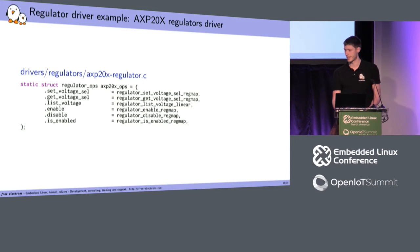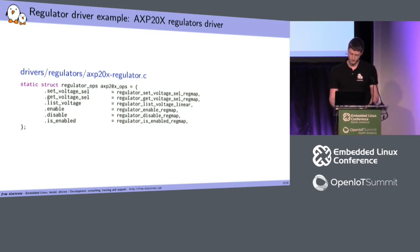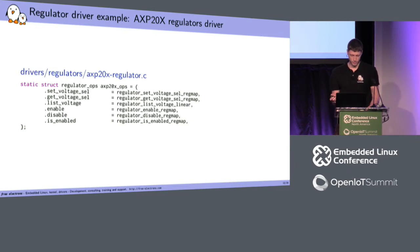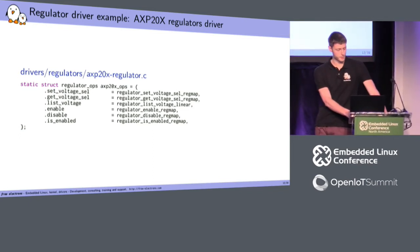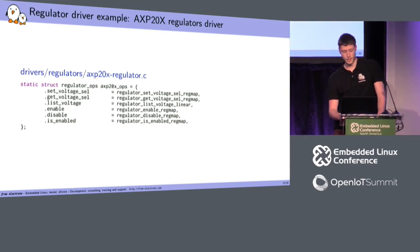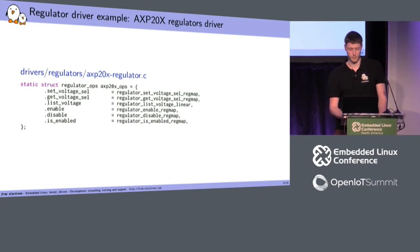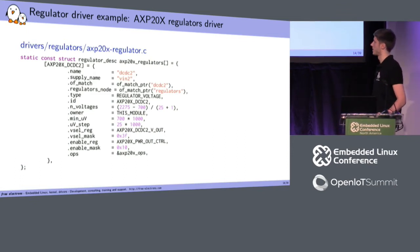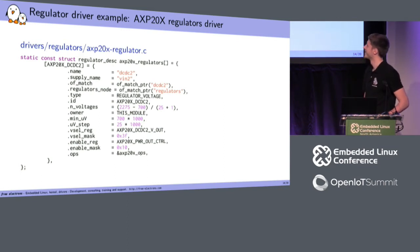I'll give some examples of each driver and each subsystem impacted by the PMIC, illustrated mostly with examples from the AXP20X drivers — these are all mainline except one, which I'll note on the slides. Here I'll quickly present the AXP20X regulators driver. You have a regulator operations structure where you give it the functions used to set the voltage, get the current voltage, get the list of available voltages, and how to enable, disable, and check if the regulator is enabled.